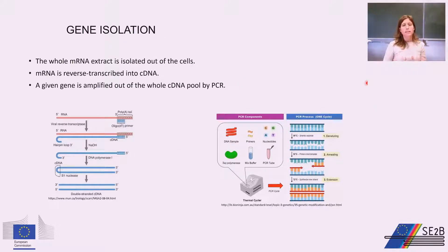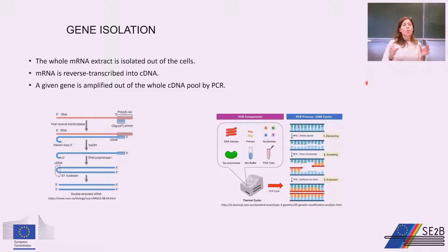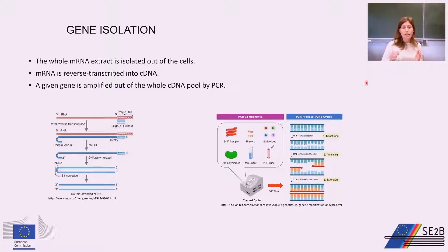The first step is to isolate the gene. For this, we isolate mRNA from the cells, then reverse transcribe the mRNA into copied DNA (cDNA). From the whole cDNA pool, we isolate our gene of interest by PCR reaction.